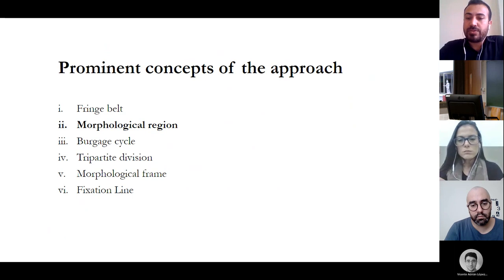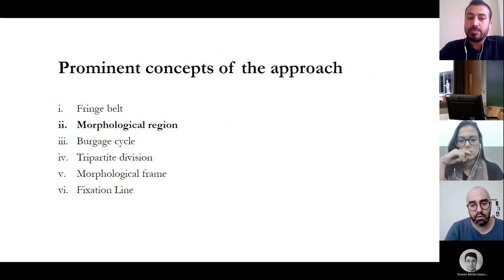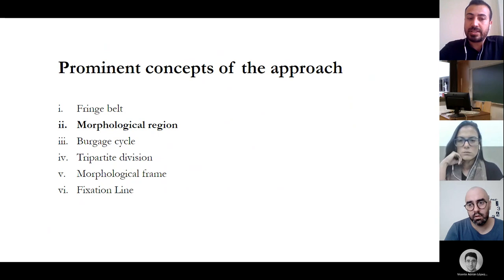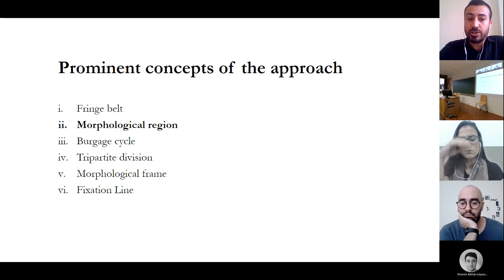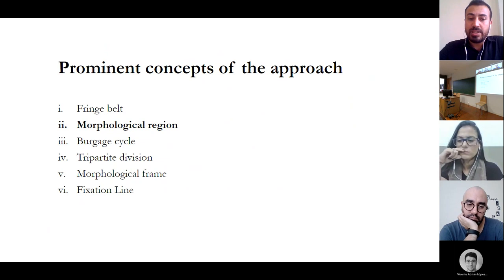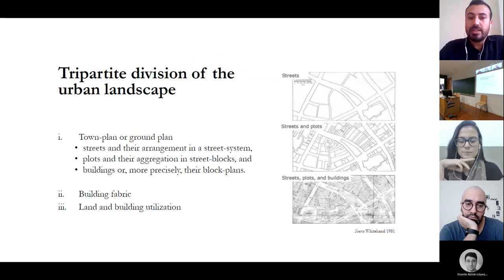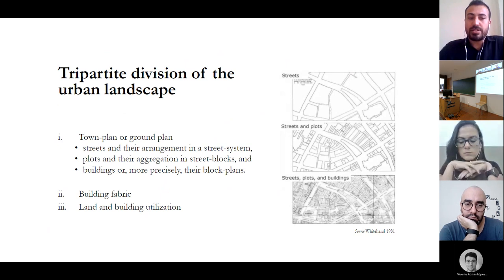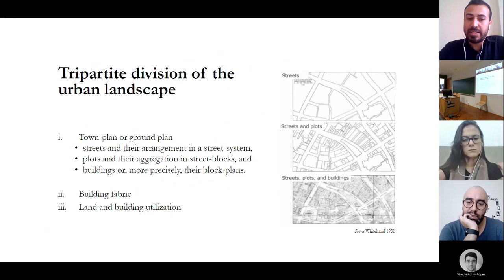Conzen developed a number of concepts: fringe belt, morphological region, burgage cycle, three-part division of the urban landscape, morphological frame, and fixation line, to name the most important. The concept of three-part division consists of three elements: town plan or ground plan, building fabric, and land and building utilization.